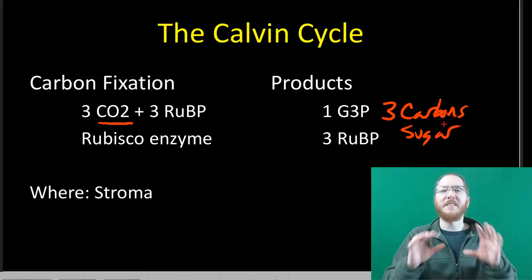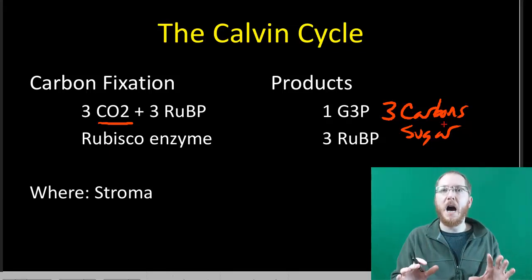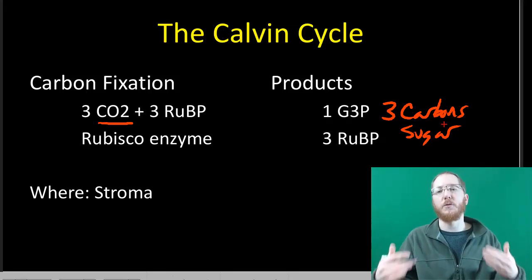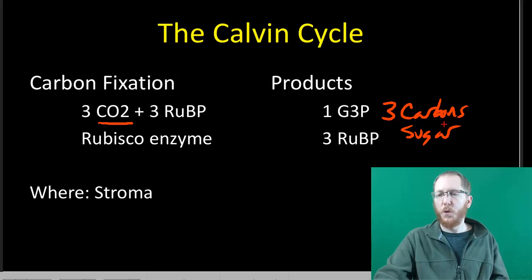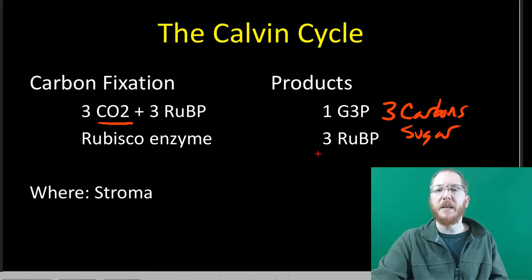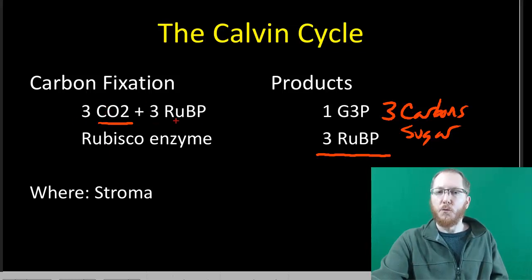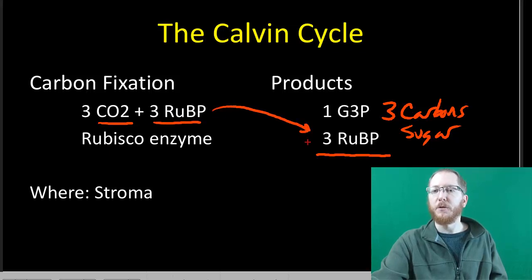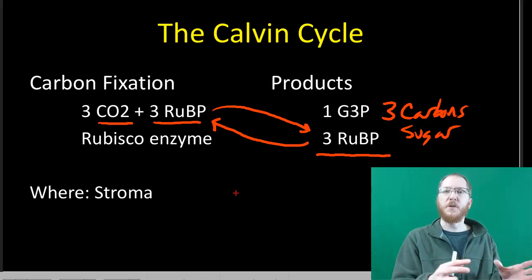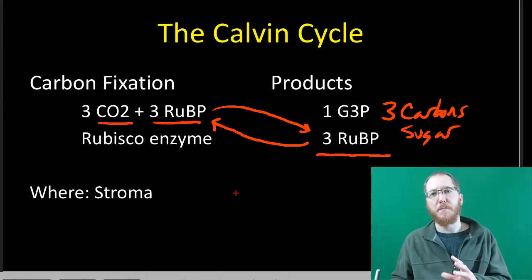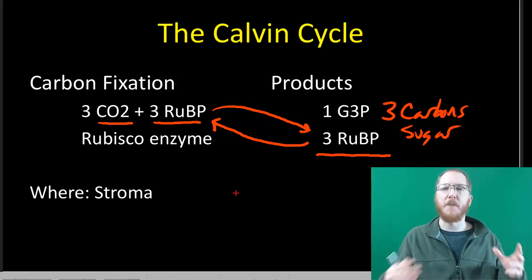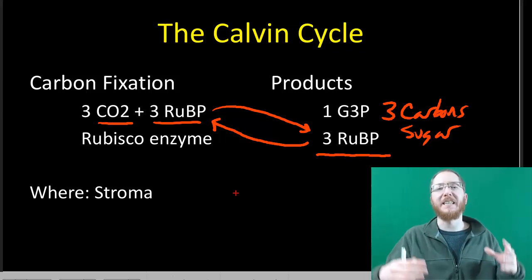What it realistically produces is actually half a glucose, or G3P. The other cool thing is at the end it regenerates the three RuBP it started with. So those three CO2s essentially become the G3P, and the other RuBPs get regenerated and rebuilt. That's why this is called the Calvin cycle — because I start with RuBP and end with RuBP, so I'm ready to start again, attach more CO2s, and continue the process.